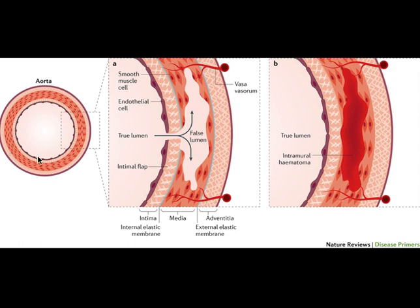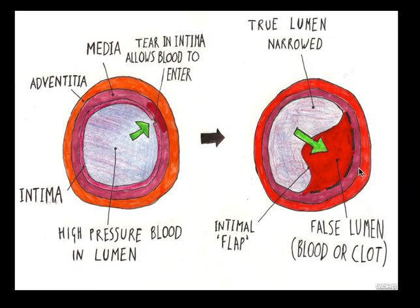This is the normal aorta — intima, media, and adventitia. You can see there is a rent or tear in the intima, and blood flows into the media creating a false lumen. The differential diagnosis includes intramural hematoma, where there is no rent but a hematoma within the media. This diagrammatic representation shows the blood flowing into the false lumen, which increases in size, alongside the true lumen — the classic appearance of aortic dissection.